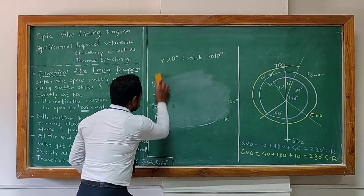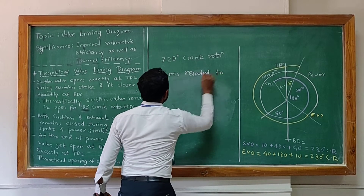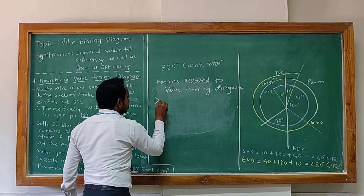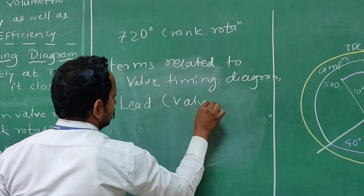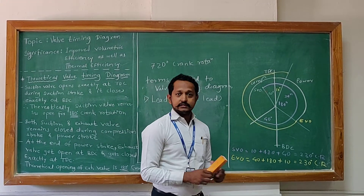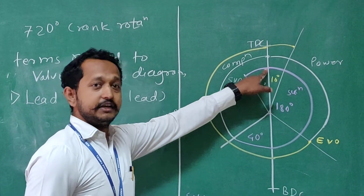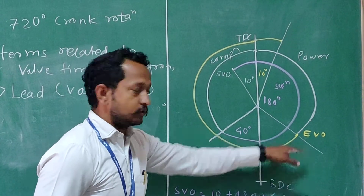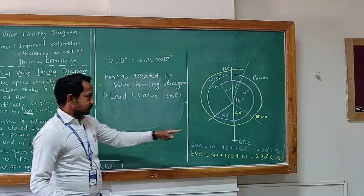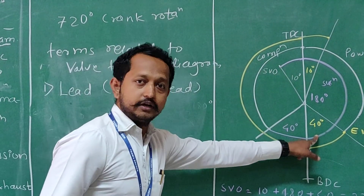Now the terms related to the Valve Timing Diagram. Number one is lead, simply called as valve lead. The lead is nothing but the pre-opening of the valve before its theoretical position. Here we can see the suction valve opens 10 degrees before TDC. Similarly, the exhaust valve opens 40 degrees before its theoretical position. Normally, this lead by default refers to the exhaust valve because the pre-opening of the exhaust valve is more than the suction valve — it is around 40 degrees, whereas here it is 10 degrees.